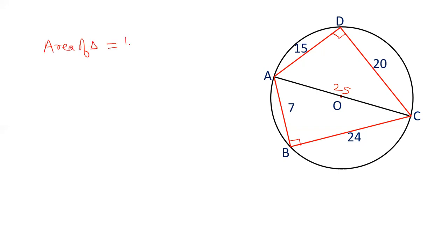So area of triangle ADC is half, the base is 15 and this is 20, and 15 into 10 is 150. Similarly, area of triangle ABC is half base into height. Base is 24, height is 7. When you cancel out this, you get 84. So area of quadrilateral ABCD is equal to 150 plus 84, and that is 234.